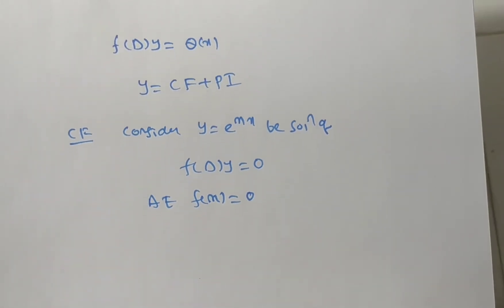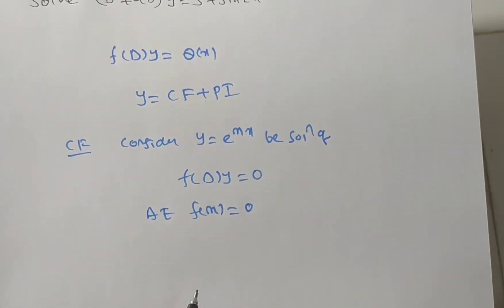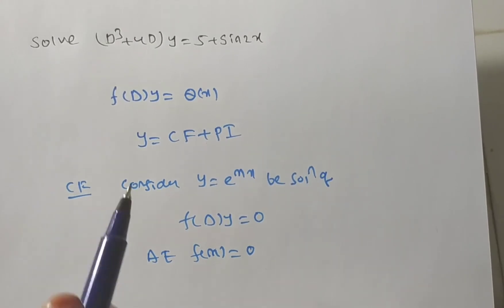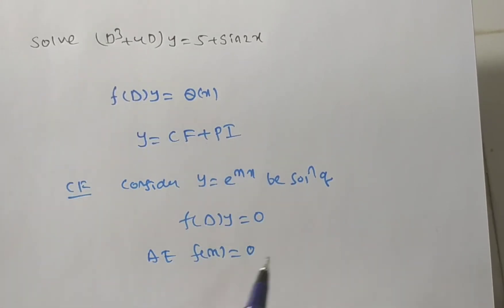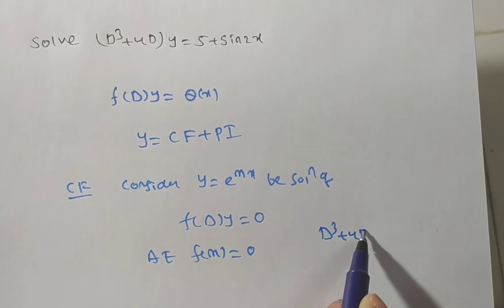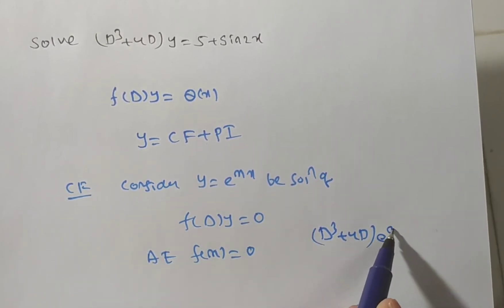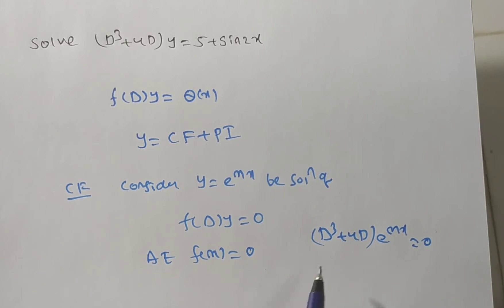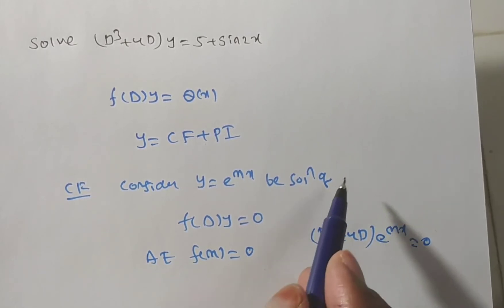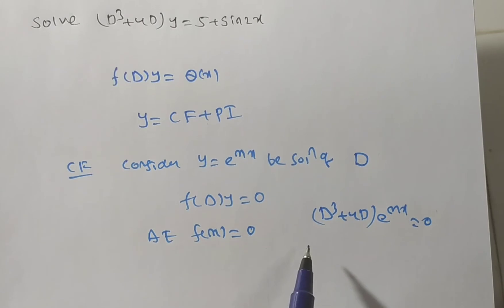The auxiliary equation is f(m) = 0 — in place of D, we replace by m. D is nothing but the differential operator. So for dq³ + 4D acting on e^(mx), we apply the differential operator.